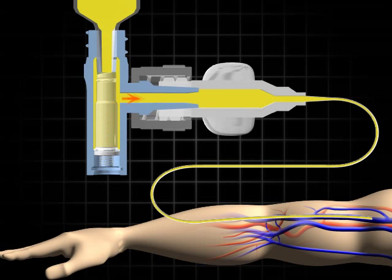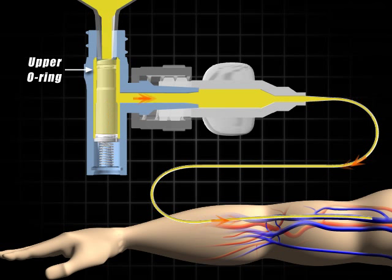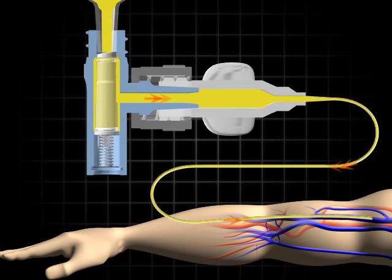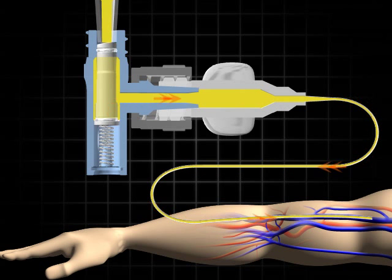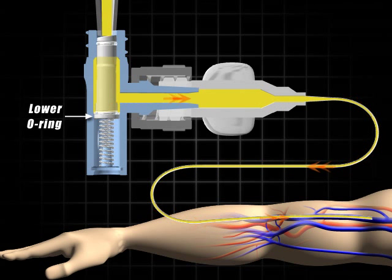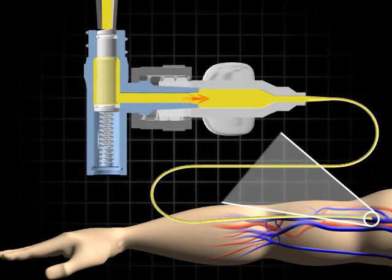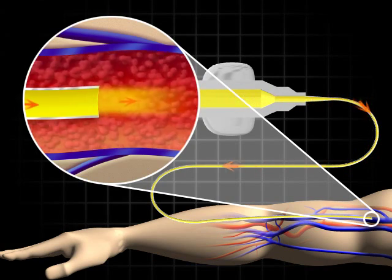When the accessing lure is removed, the white poppet begins to return. The upper O-ring seals off the fluid pack, and as the poppet travels back to its normal position, the lower O-ring moves the fluid from the reservoir chamber out through the catheter.